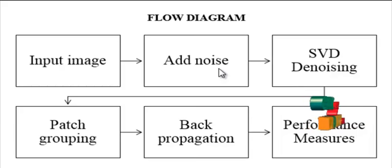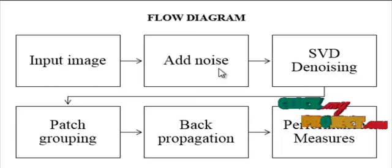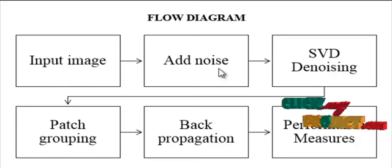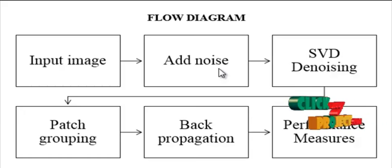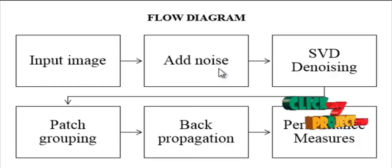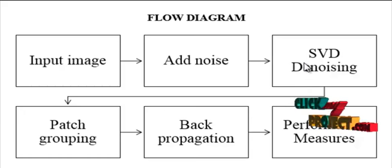The Gaussian distribution values are added uniformly over the complete image. The noisy image is represented using the formula y = x + e, where x is the input image and e is the added noise. After that, we employ the SPD denoising process.